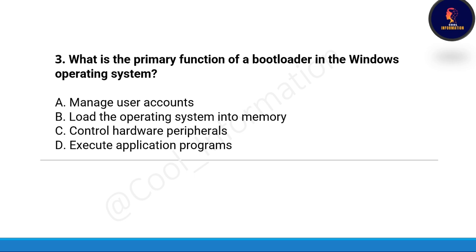Moving to the next question: What is the primary function of a bootloader in the Windows operating system? Option A: manage user accounts, Option B: load the operating system into memory, Option C: control hardware peripherals, Option D: execute application programs. The correct option is Option B, which is load the operating system into memory.